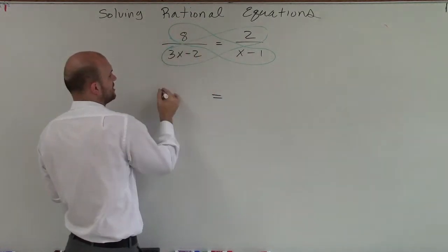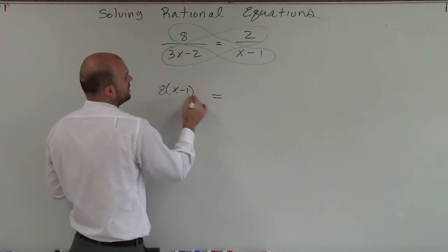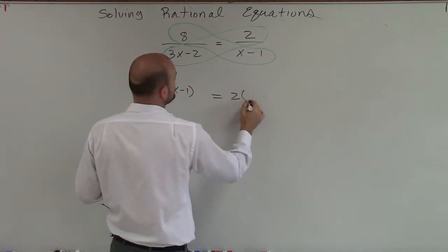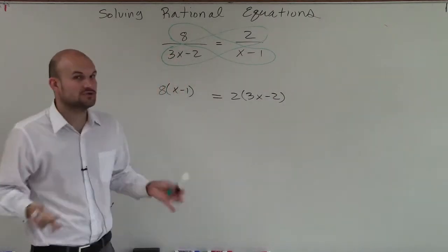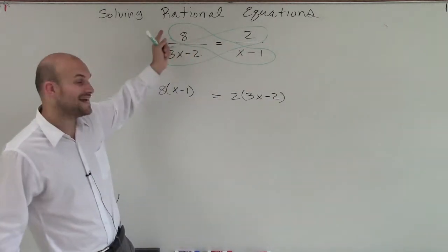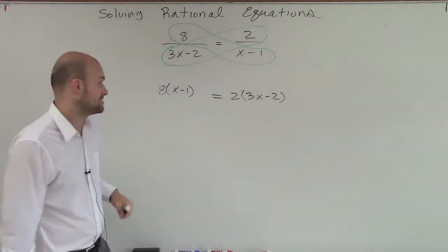So I'll have 8 times (x - 1) equals 2 times (3x - 2). Notice how I didn't lose my equal sign. All I did is multiply diagonally across my equation.